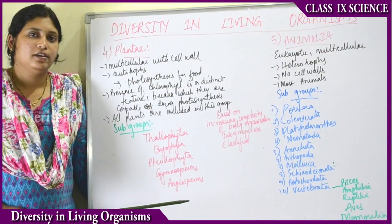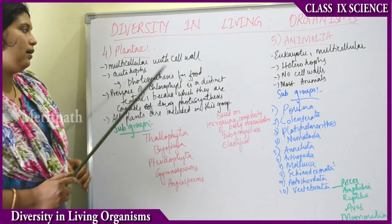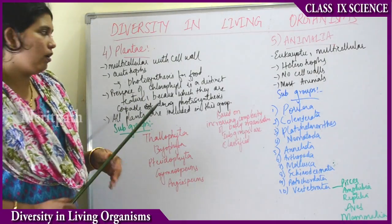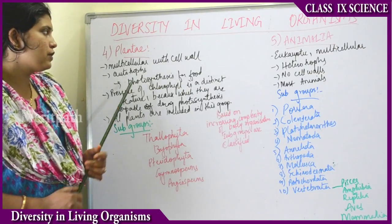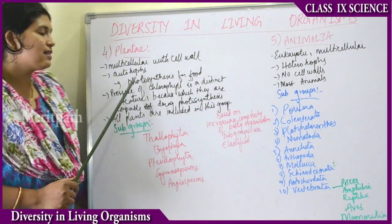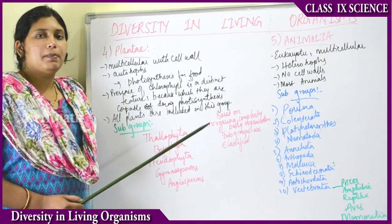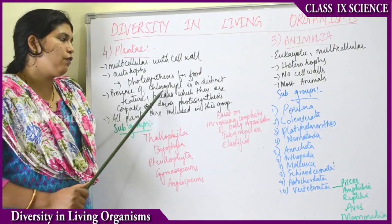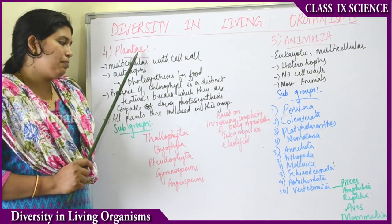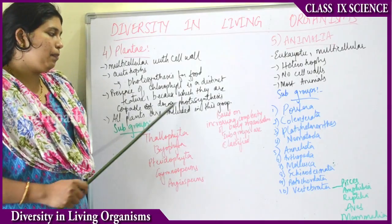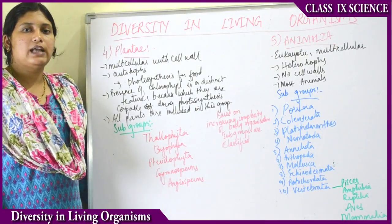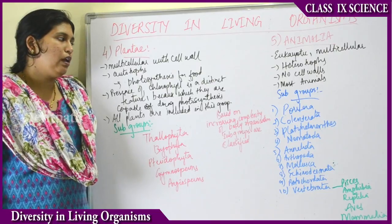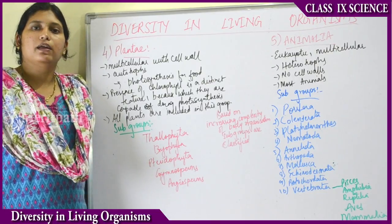The fourth kingdom is Plantae. Plantae are multicellular organisms with a cell wall. They are autotrophs — Plantae is the only group which can prepare its own food. They do this by photosynthesis. The presence of chlorophyll is a distinct feature of Plantae, because it enables them to carry out photosynthetic activity using the green pigment chlorophyll.